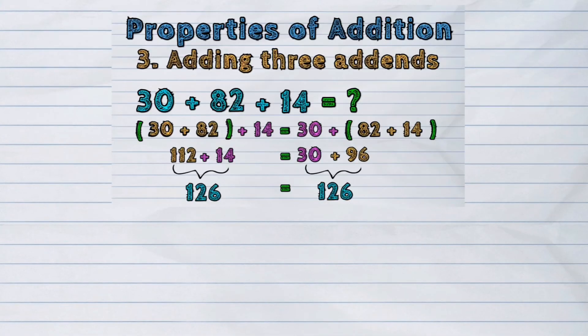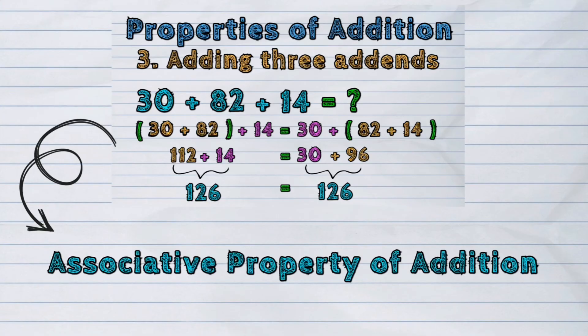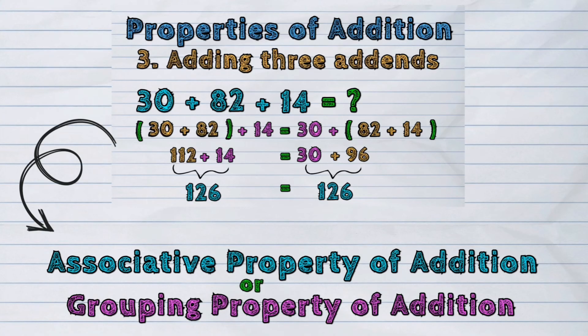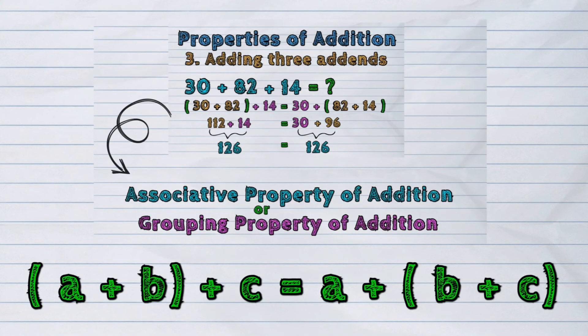This property is called the associative property of addition or the grouping property of addition.